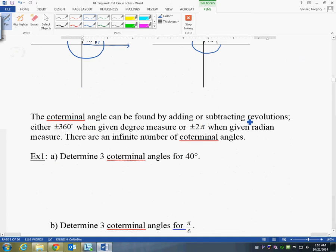Any time you want to find a coterminal angle, you add or subtract revolution. So a revolution is an entire circle. A whole circle in degrees is 360 degrees. So we're either adding or subtracting multiples of 360 degrees. Now in radians, a full circle is 2π. So 2π radians is equivalent to 360 degrees. When we're talking radians, then we either add or subtract multiples of 2π.